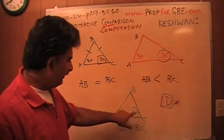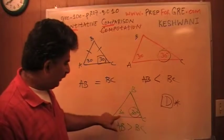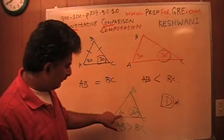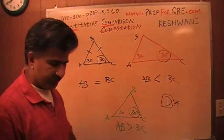So if this is more than 30, the side facing it is going to be more than this angle, which is 30. Since this angle is less than this angle, the side facing this one, BC, is less than that.